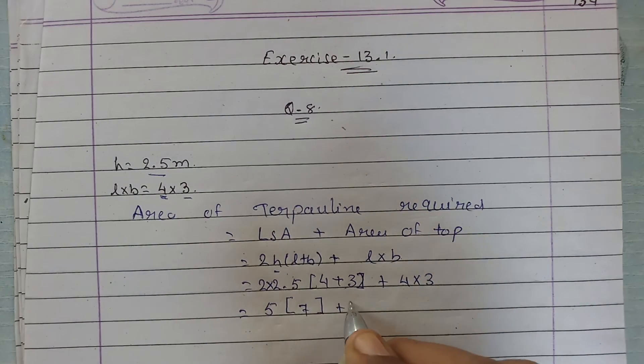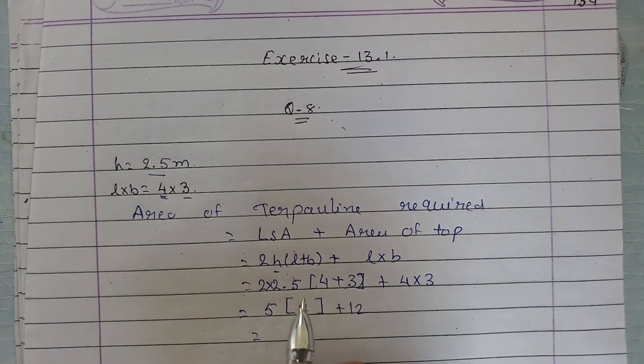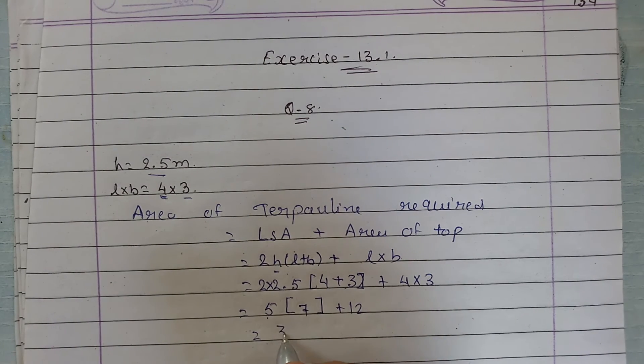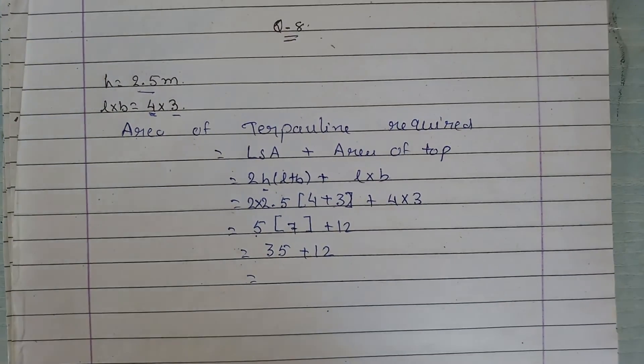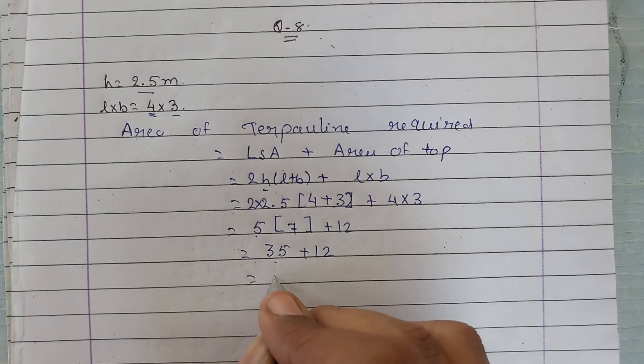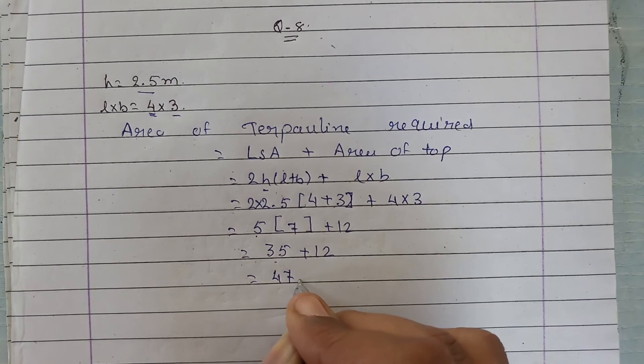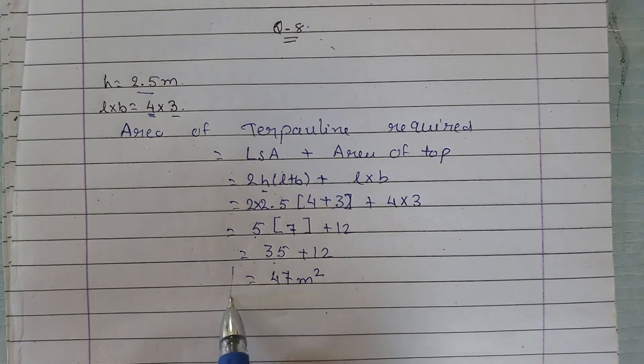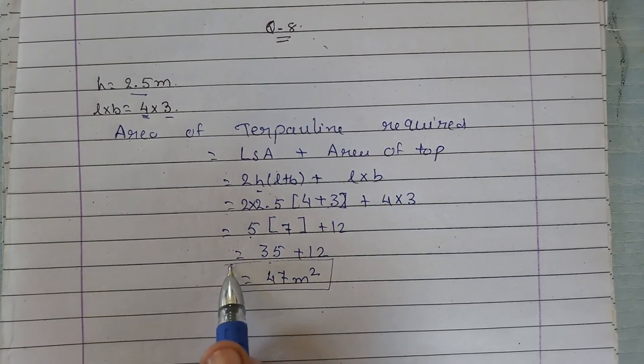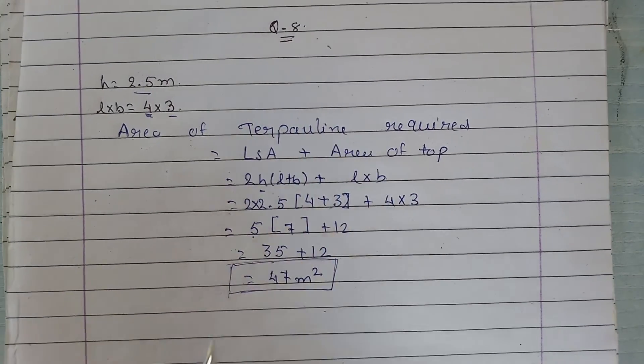Now 5 times 7, that will give you 35 plus 12. By adding them we will have 35 plus 12, that is equal to 47 meter square. So area of the tarpaulin required for making a shelter is 47 meter square.